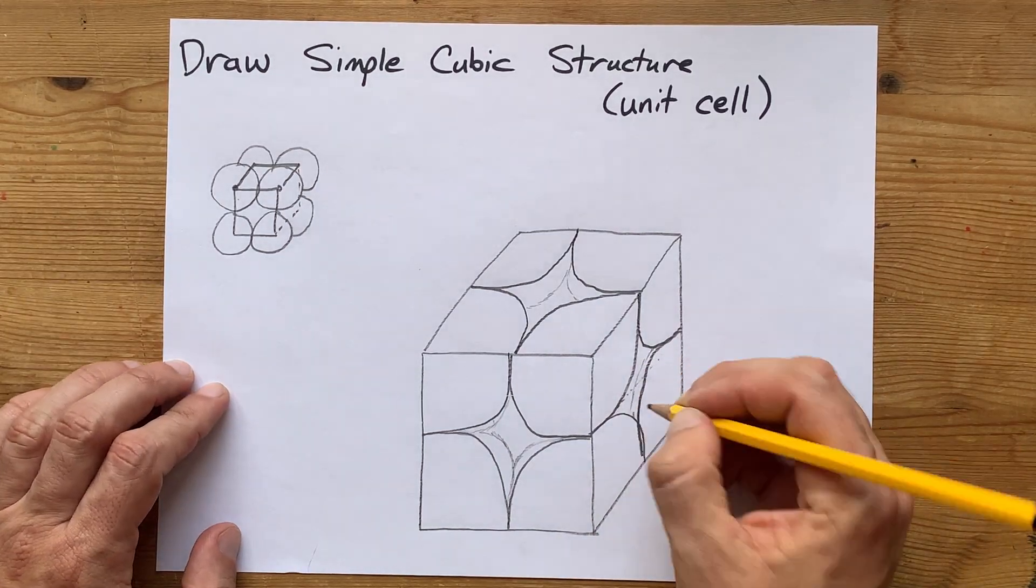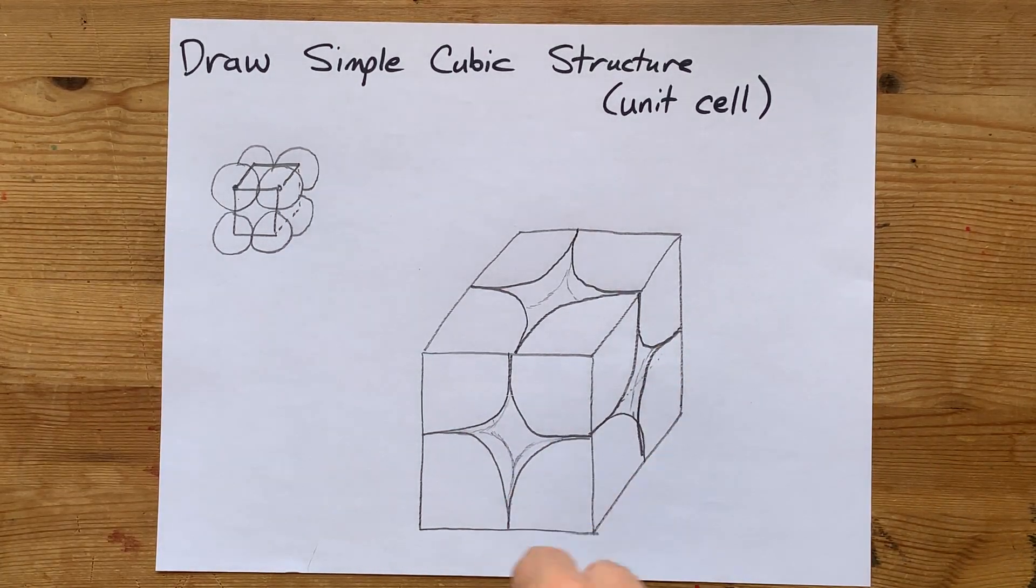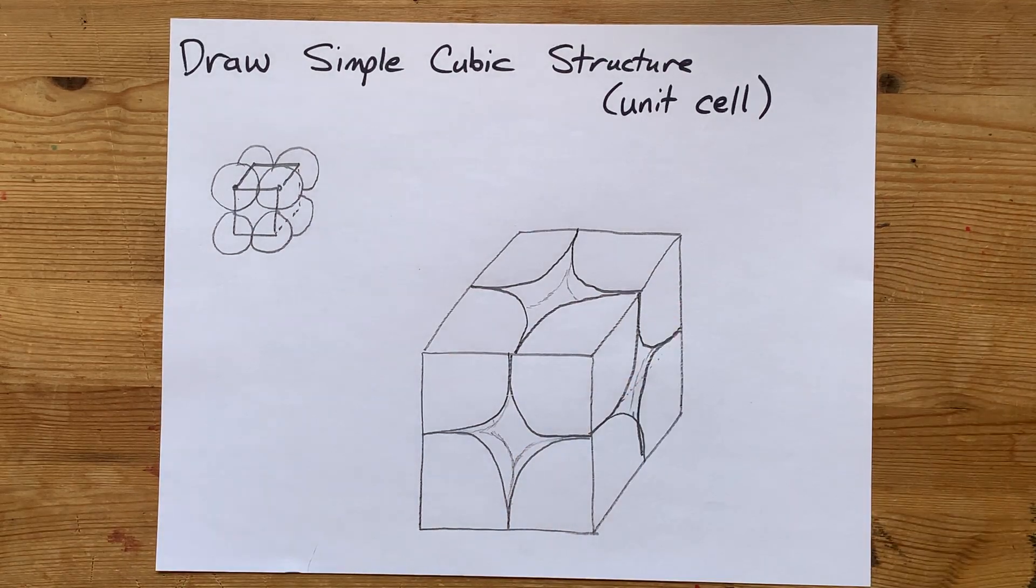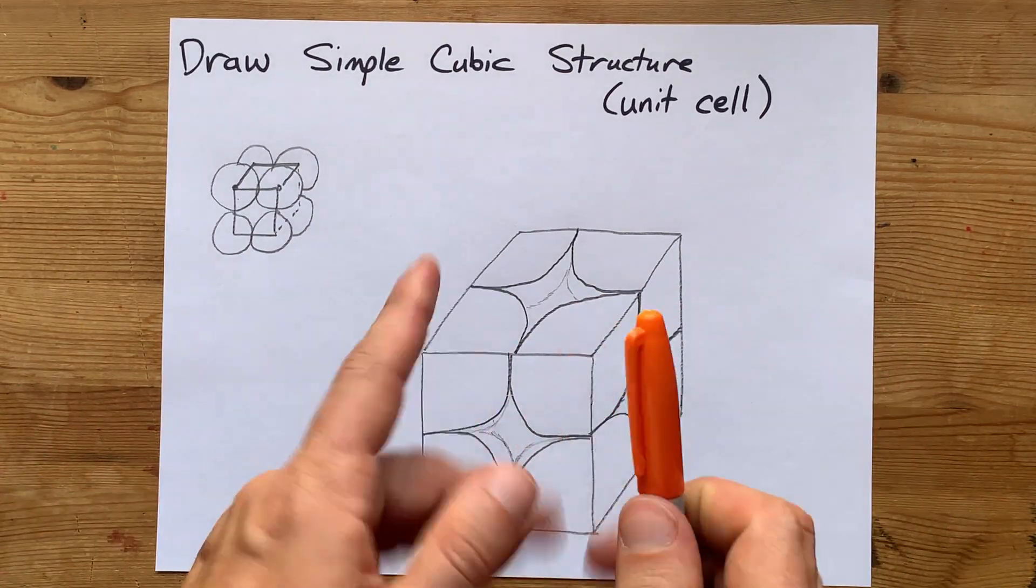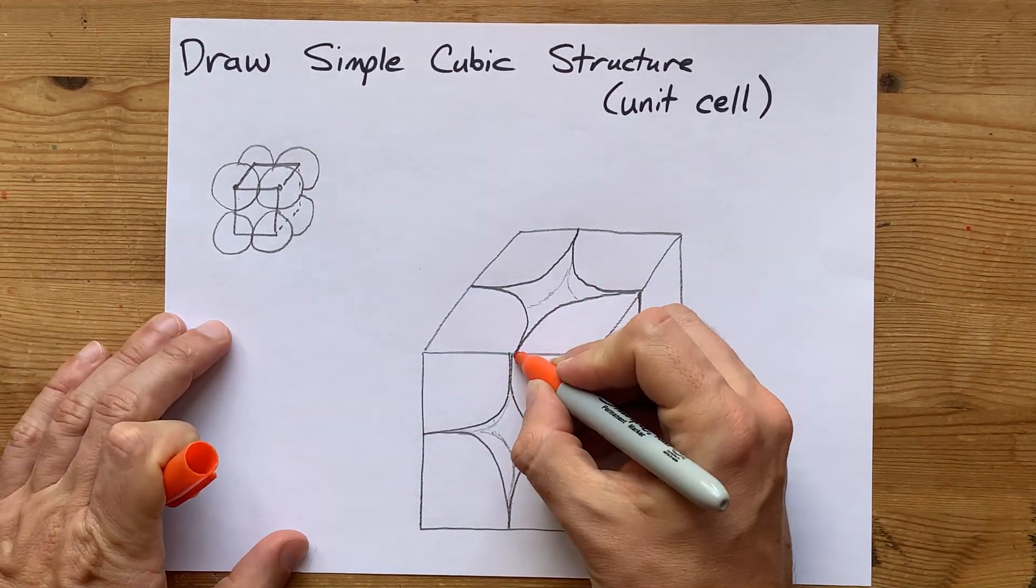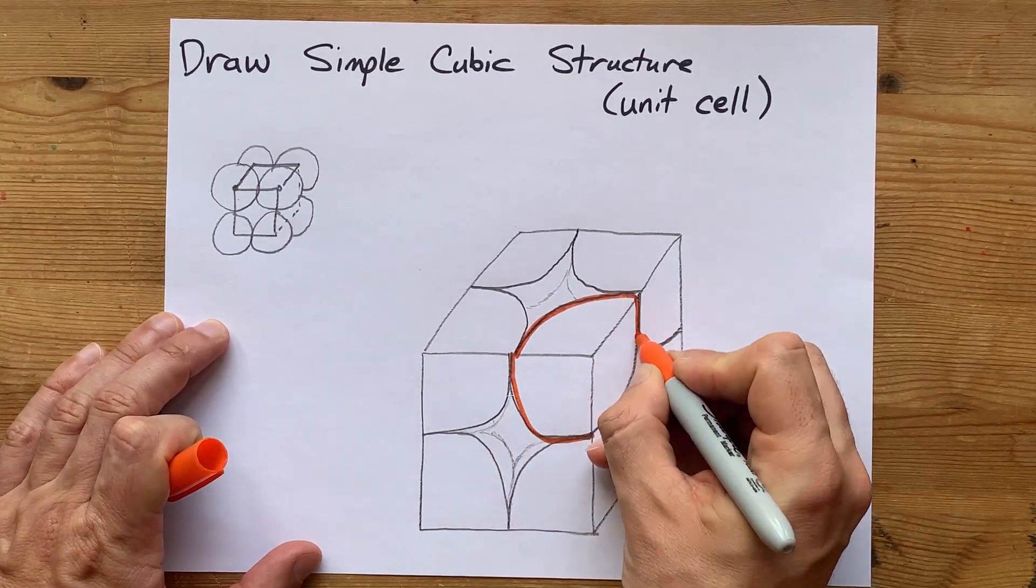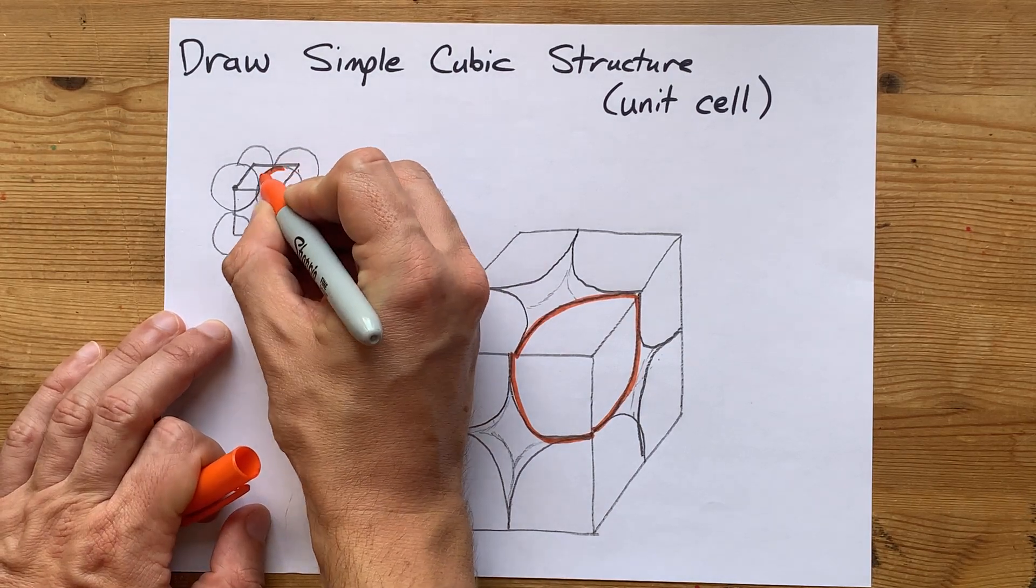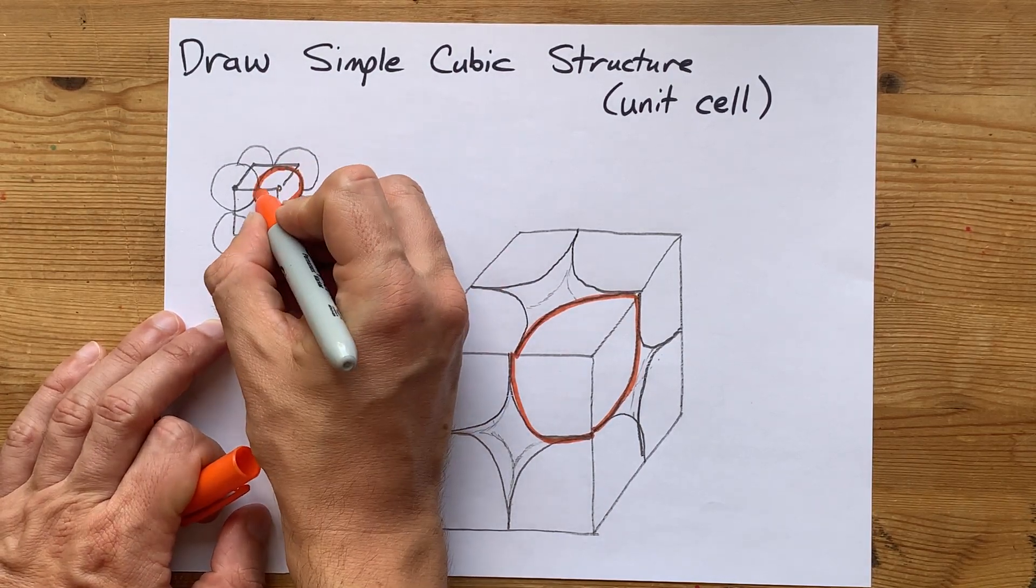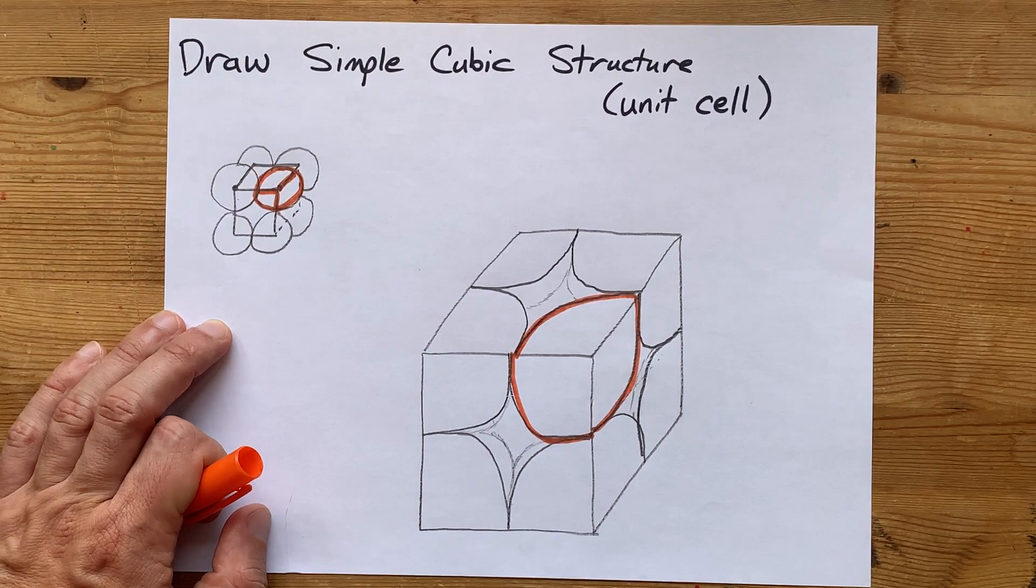This is my simple cubic unit cell. Just to help your eyes, the idea is that this, that, and that all came from this sphere here, which got chopped this way, that way, and the other way.